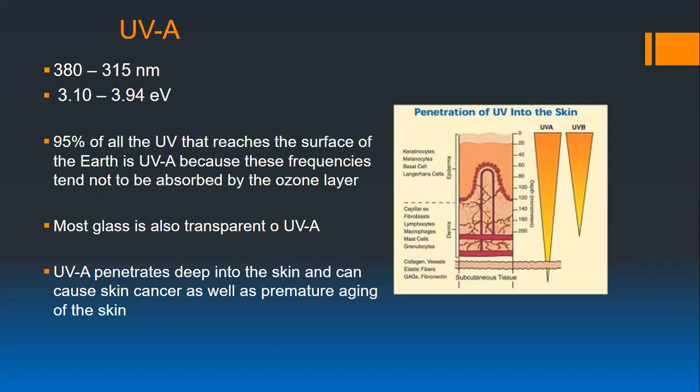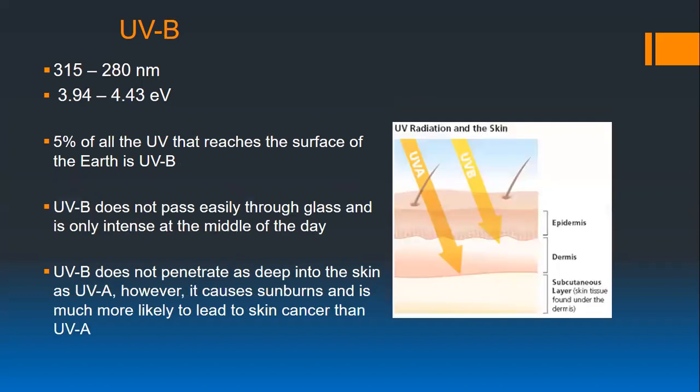Even though UVB has more energy, it doesn't penetrate as deeply as UVA and doesn't penetrate the atmosphere very much. Only 5% of the UV light reaching the surface of the Earth is UVB. It doesn't easily pass through glass, is only intense in the middle of the day, and doesn't penetrate as deep into the skin. But it does cause sunburns and is much more likely to lead to skin cancer than UVA, so you want to protect yourself.